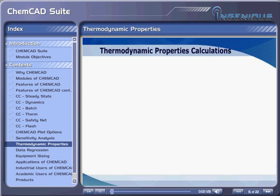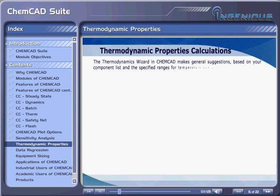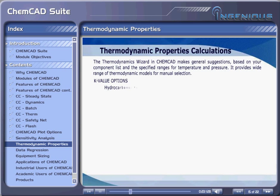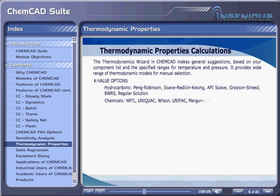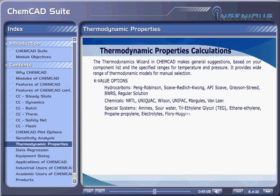Thermodynamic Properties Calculations. The Thermodynamics Wizard in ChemCAD makes general suggestions based on your component list and the specified ranges for temperature and pressure. It provides a wide range of thermodynamic models for manual selection. K-value options available are: for hydrocarbons — Peng-Robinson, Soave-Redlich-Kwong, API Soave, Grayson-Streed, BWRS, Regular Solution; for chemicals — NRTL, UNIQUAC, Wilson, UNIFAC, Margules, Van Laar; for special systems — amines, sour water, triethylene glycol, ethylene-propylene, electrolytes, Flory-Huggins.